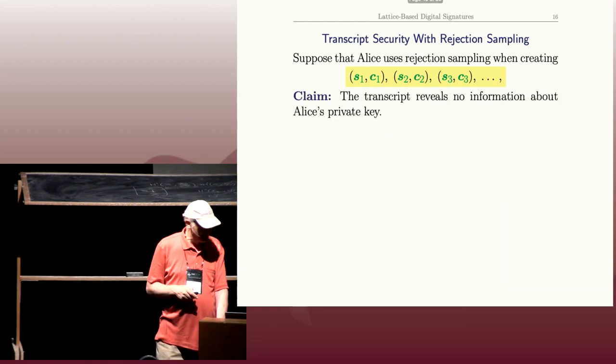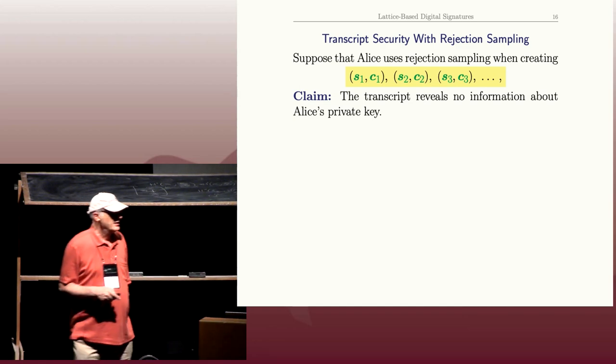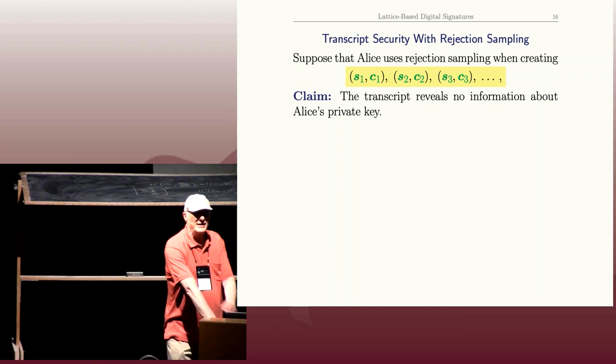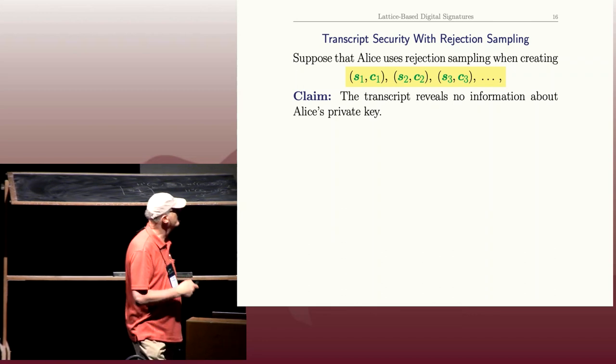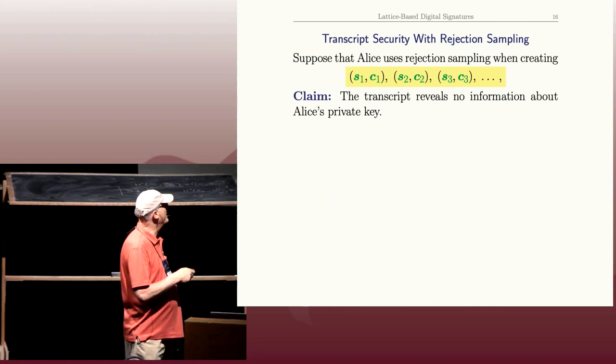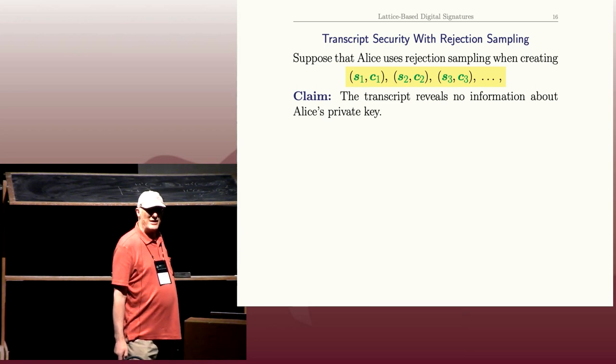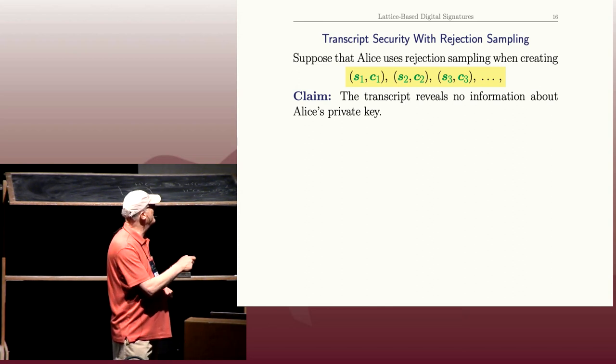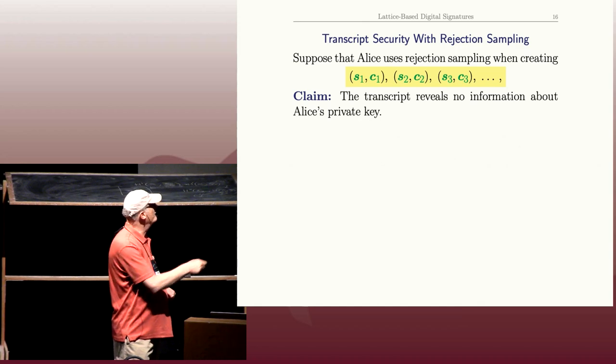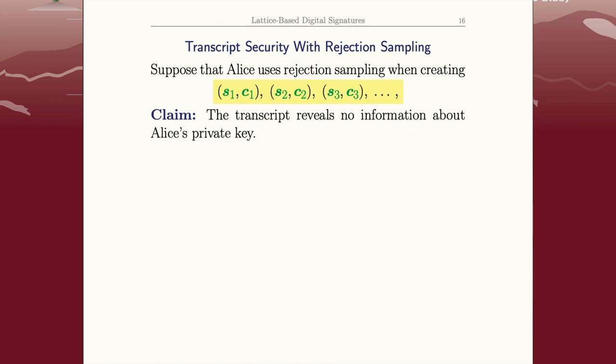Okay, now let's suppose she does it—she signs things using rejection sampling. I claim that in that case, this transcript reveals no information about Alice's private key. Now, the first thing I want you to think about is this is a perfectly valid English sentence: this list of numbers reveals no information about this other quantity. But how do you make that a rigorous mathematical statement and then prove it?